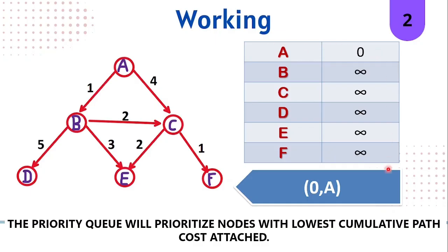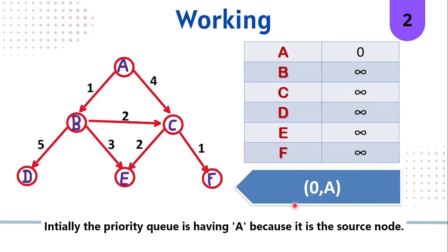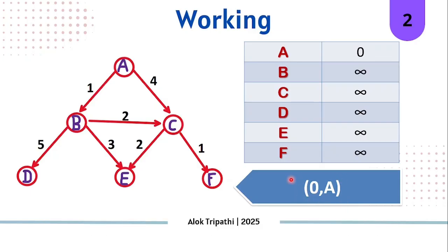First, we'll be initializing the table: source node with value 0 and every other node with value infinity. The priority queue will have A with cumulative path cost 0. As we have only one element, in the first iteration we'll be removing 0A.